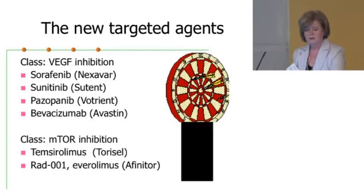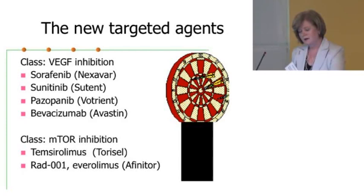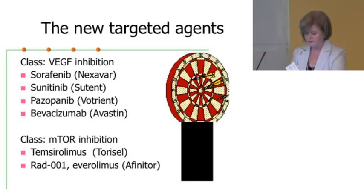I use generic and proprietary names interchangeably, so here they are listed out: sorafenib is Nexavar; sunitinib is Sutent; the new one is pazopanib, or Votrient; bevacizumab is Avastin — that's an IV drug used in the US. The mTOR class includes temsirolimus, also called Torisel, and then the newest one, everolimus, also called Afinitor — I still call it RAD001.